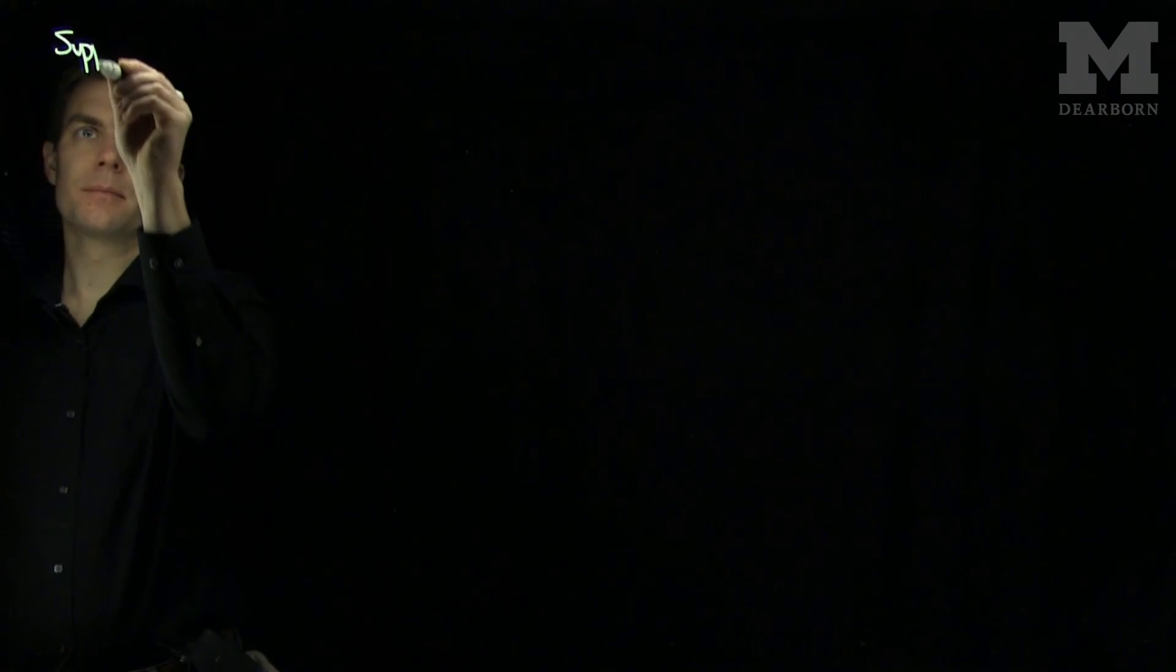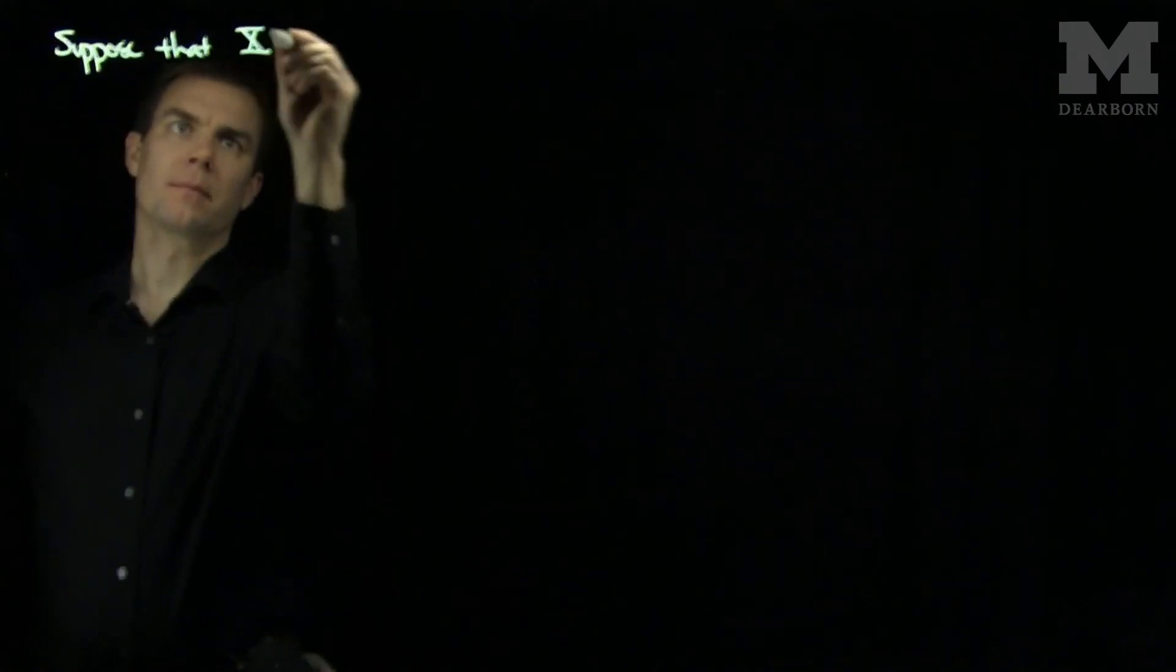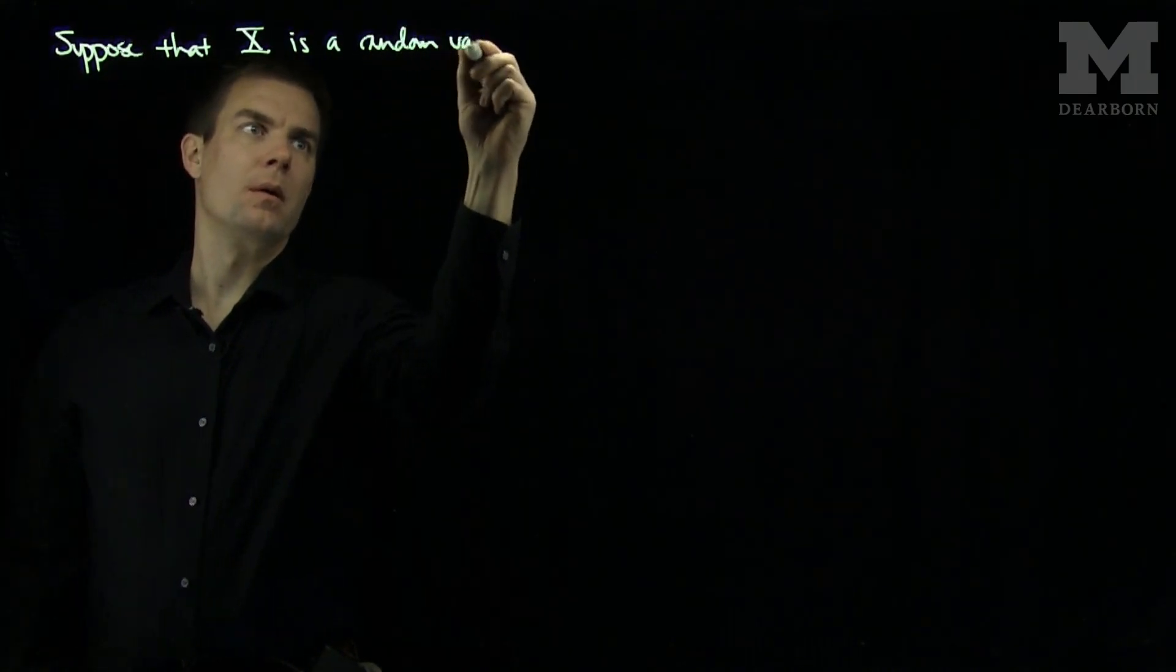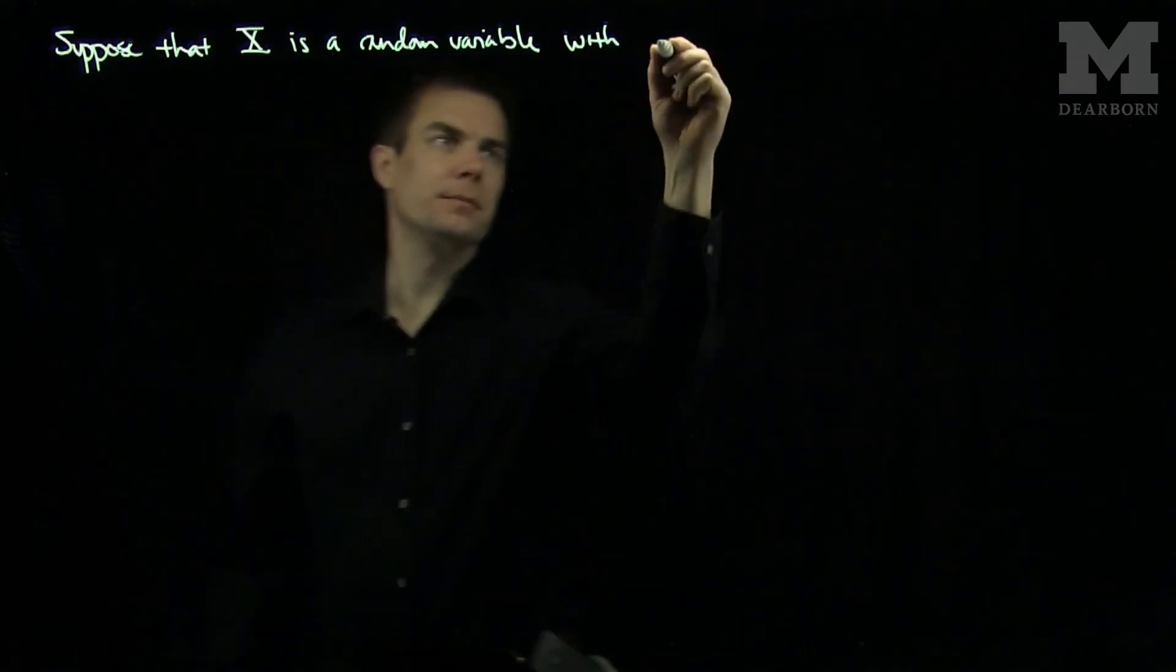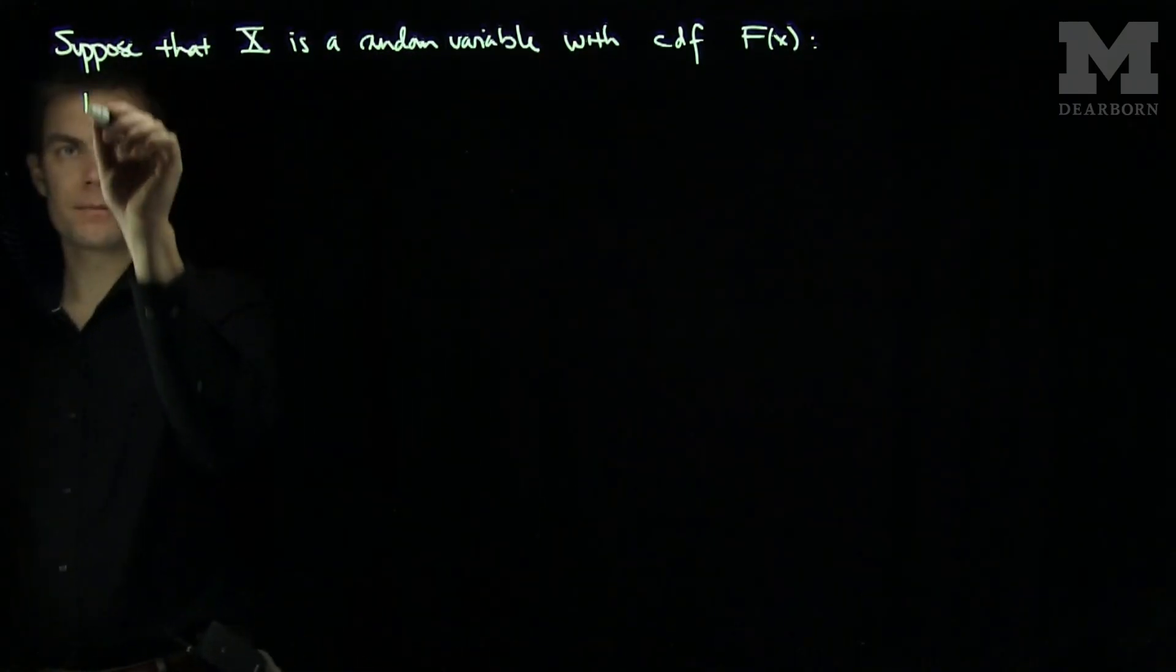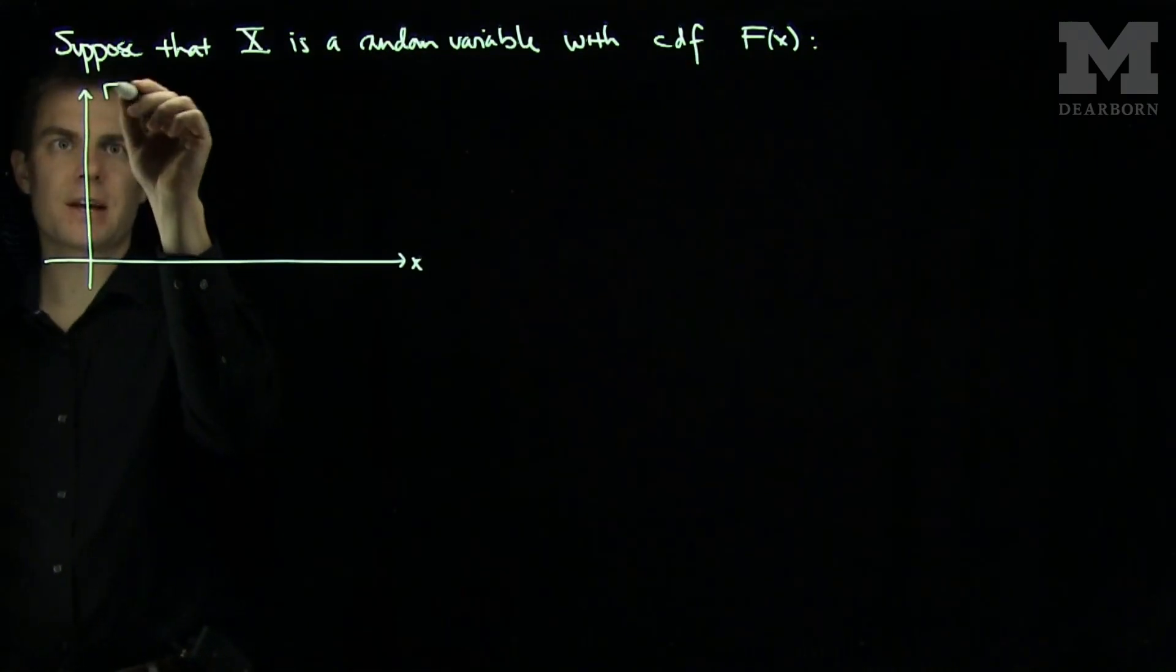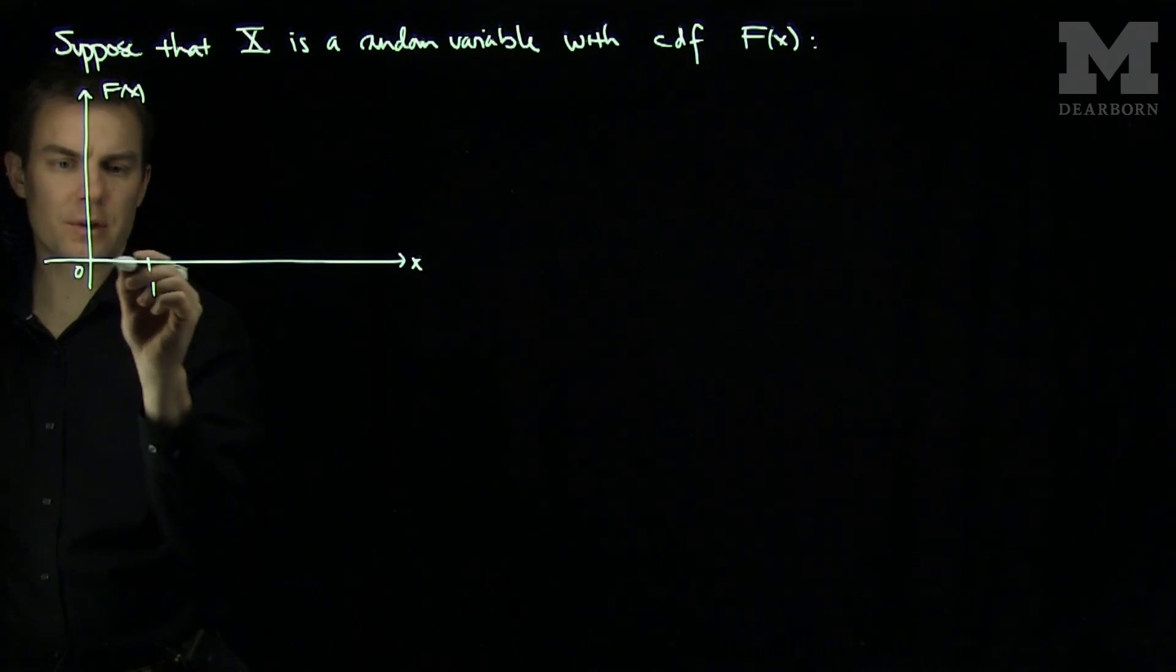Let's suppose that X is a random variable with CDF F(x), and we'll plot the CDF. Here's the x-axis, here is the F(x) axis.